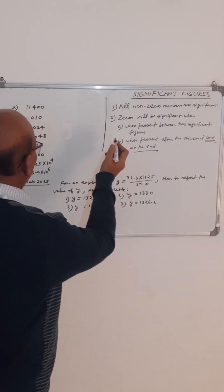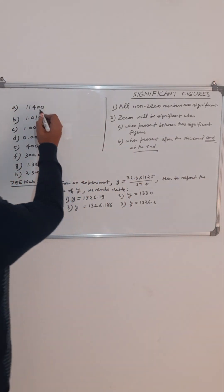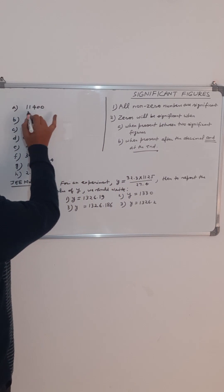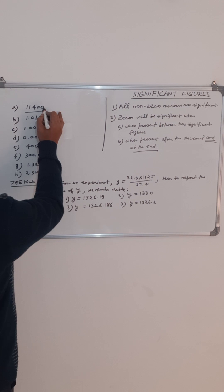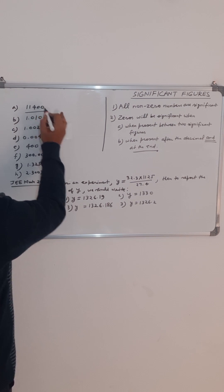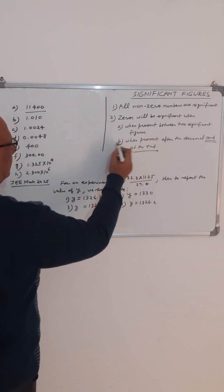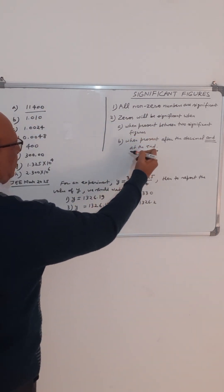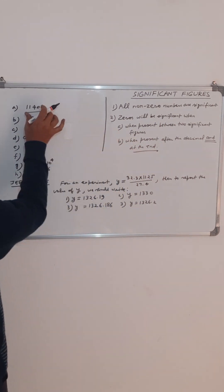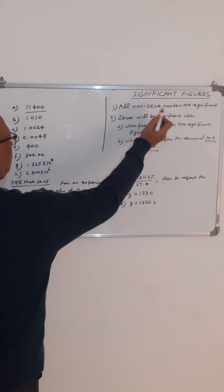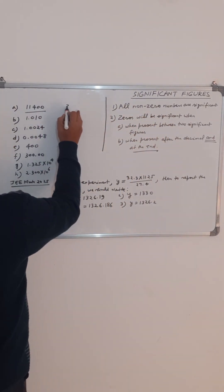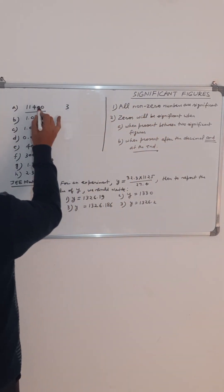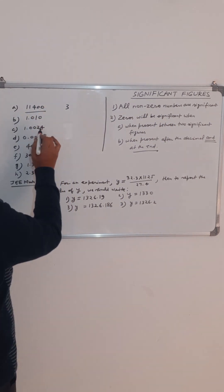Let us understand with examples. Find the significant numbers in 11400. Here we see the zeros — they are not after the decimal, so they do not satisfy the second condition. And they are not present between two significant figures, because all non-zero numbers are only significant. So this is having only three significant figures; these two zeros will be non-significant.